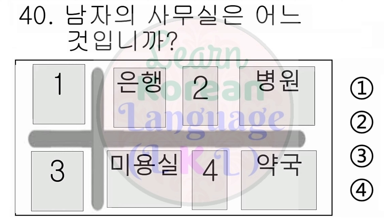30번. 그 사람 직업이 뭐예요? 1번. 간호사예요. 2번. 집이 멀어요. 3번. 직업이 있어요. 4번. 공장에 없어요. 다시 들으십시오. 그 사람 직업이 뭐예요? 1번. 간호사예요. 2번. 집이 멀어요. 3번. 직업이 있어요. 4번. 공장에 없어요.